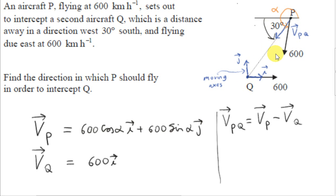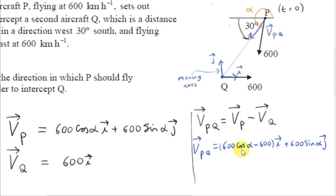In certain situations, of course, it's not possible for the two objects to intercept each other. I covered that in another video — where if the objects don't intercept each other, we consider the distance of closest approach, which is a much more difficult problem. If the objects can intercept, it's a fairly straightforward problem. Here is vector VPQ — I've taken vector VP and subtracted VQ. So I've taken the I component of VP and subtracted the I component of VQ, then the J component of VP minus the J component of VQ, which is zero, giving 600 sine alpha.